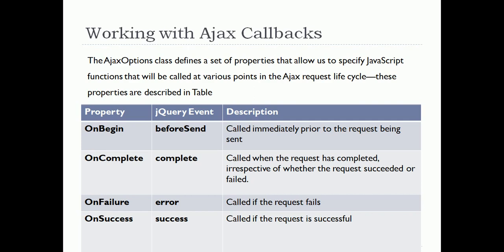Next we are going to see Ajax callbacks. For callbacks, you have to specify the name of the JavaScript function you want to execute at various points in the Ajax request lifecycle. These are set using the properties: OnBegin, OnComplete, OnFailure, and OnSuccess. When you set the OnBegin property, the specified function is called immediately before making the Ajax request. OnComplete is called when the request has completed, whether it succeeded or failed.